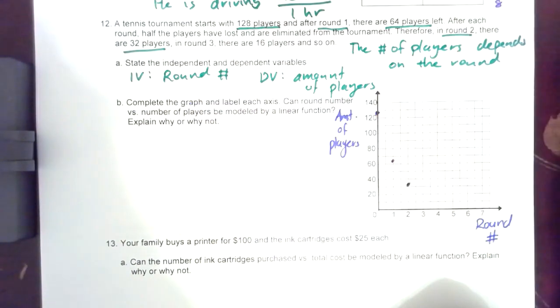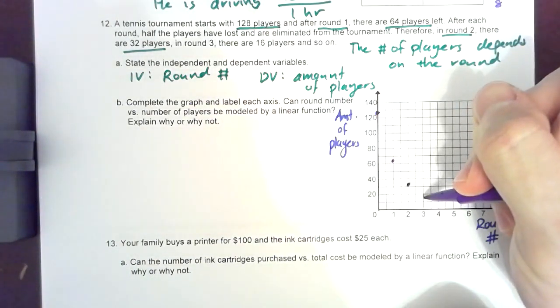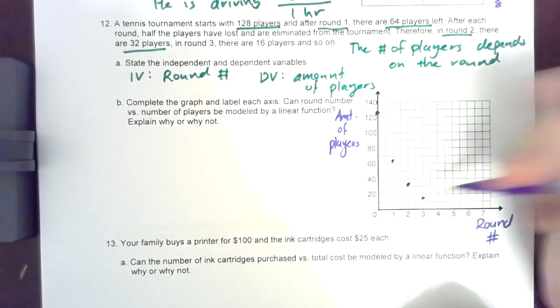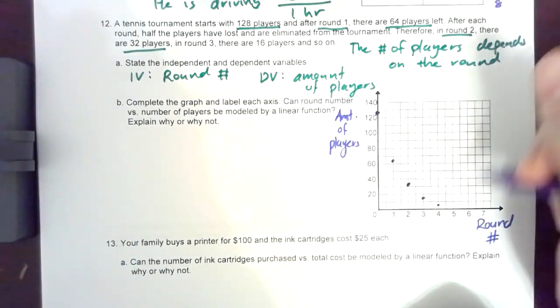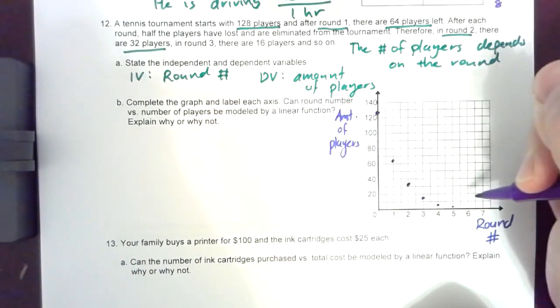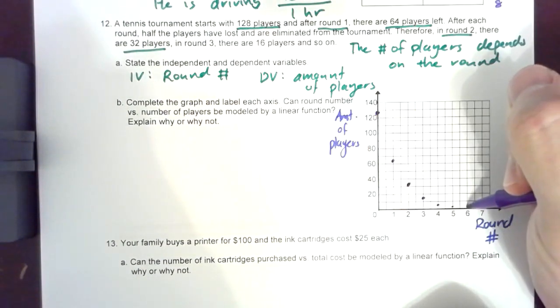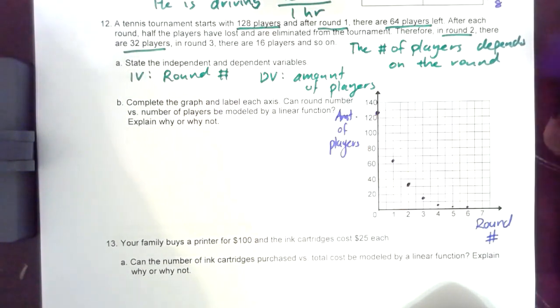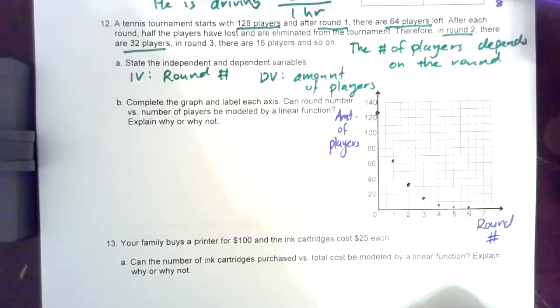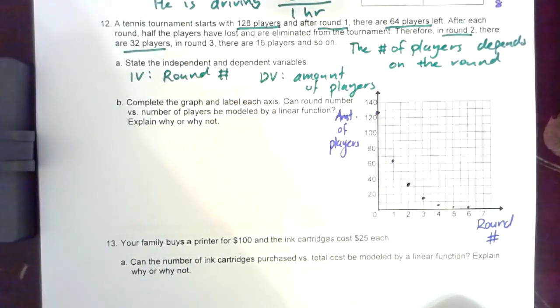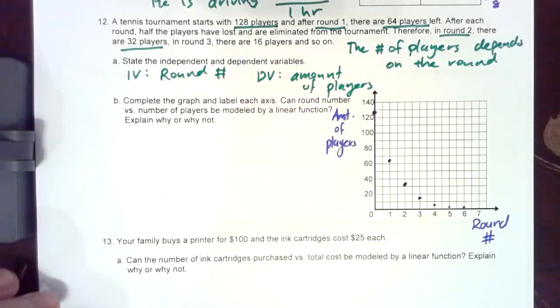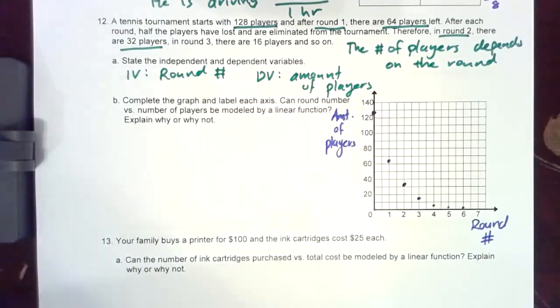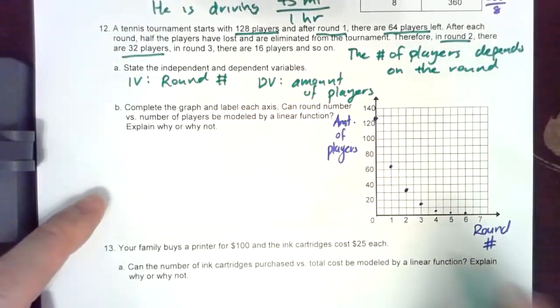Round three there should be 16, so it gets even less and less. This is 10, this is 20, so this is 16. Round four should be eight. Five should be four. Round six should be two which is really small and then finally you'll have a victorious winner. So I'm not going to connect it because there is no half round, there's no 0.5 round.